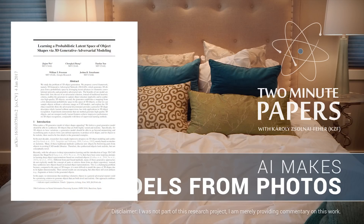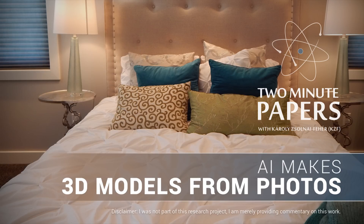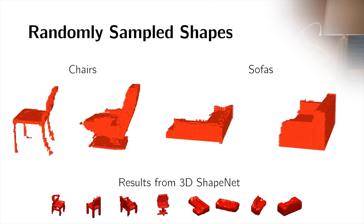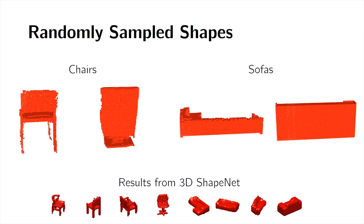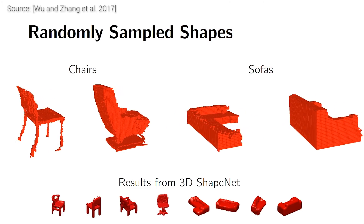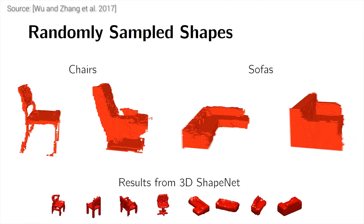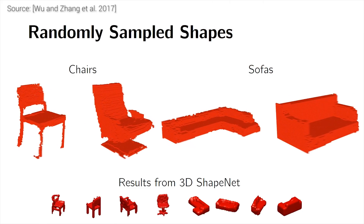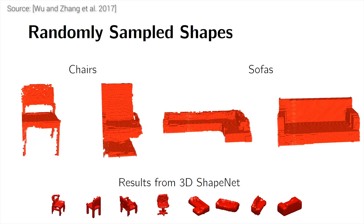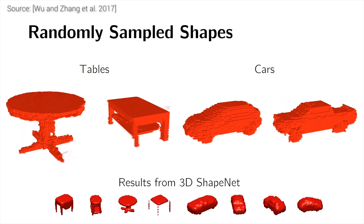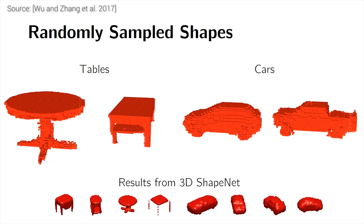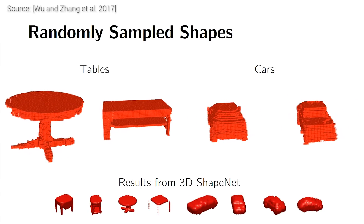Dear Fellow Scholars, this is Two Minute Papers with Károly Zsolnai-Fehér. What if we tried to build a generative adversarial network for 3D data? This means that this network would work not on the usual two-dimensional images, but instead on three-dimensional shapes.